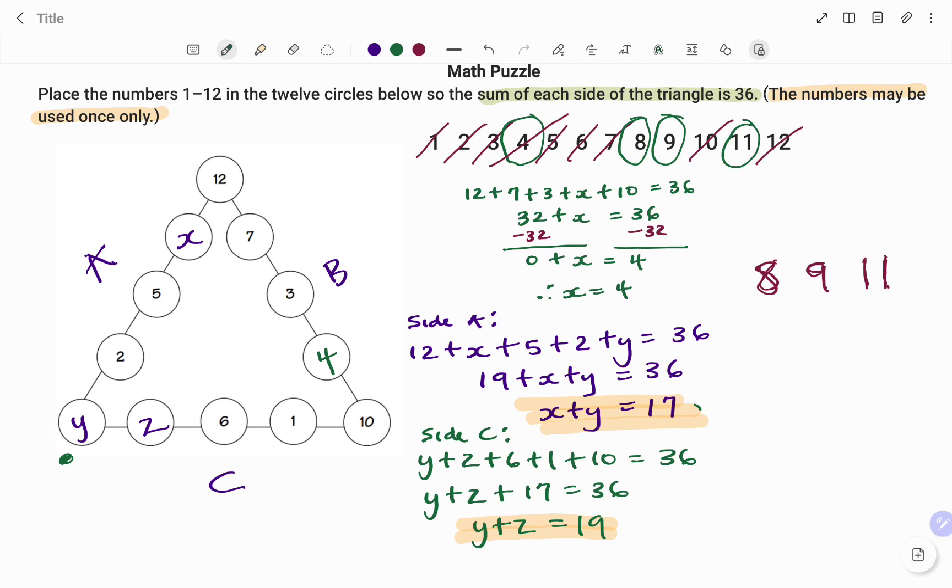The third step is to use 8 as my y. And if I do a quick check, 8 plus 9, which will give me 17, 8 plus 11 will give me 19. So therefore my y would be 8 because I got the exact combination I needed.